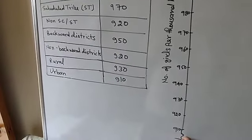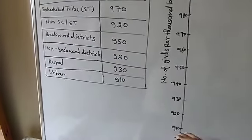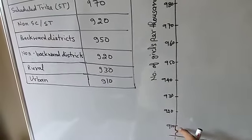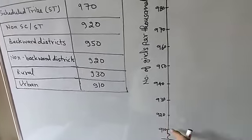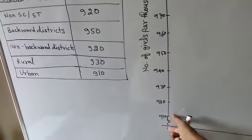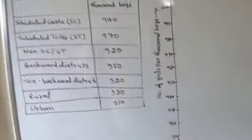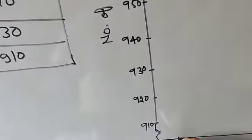The kink means that before 910, values like 900, 890, 880 and so on all exist between that space. So whenever the first interval is much larger than the other intervals, you need to draw a kink at the beginning of the y-axis.